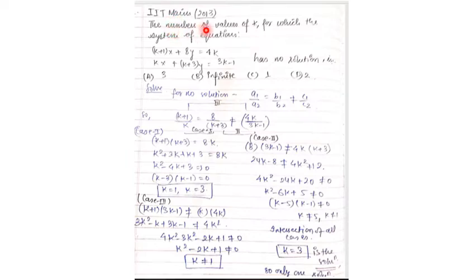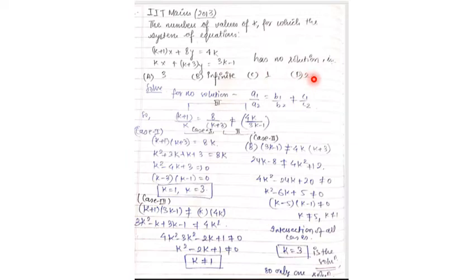The problem asks for the number of values of k for which the given system of equations has no solution. The options are 3, infinite, 1, and 2. For no solution, the condition is a1/a2 = b1/b2 ≠ c1/c2.